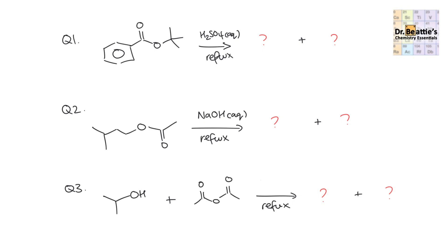Question one: you've got this ester here. It's a benzoate ester because we've got a benzene ring in there. It's under acidic conditions, as you can see from the sulfuric acid, and we're refluxing it, so we're adding water across it. Locate that carbonyl — that's our C=O — then look for the C-O bond, the C-X bond. Remember the C-C bond will stay intact. Draw the left-hand side fragment, imagine cutting that bond, then draw the right-hand side fragment. Under acidic conditions, we add the hydrogen to the alcohol fragment regardless, and then add an OH onto the carbonyl fragment. Our two products are a carboxylic acid and an alcohol.